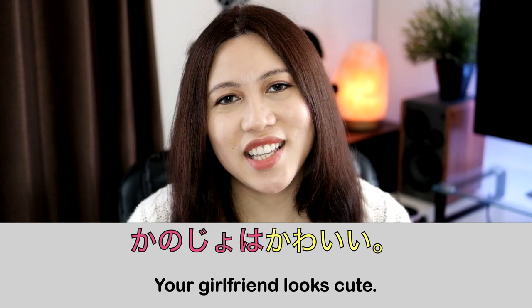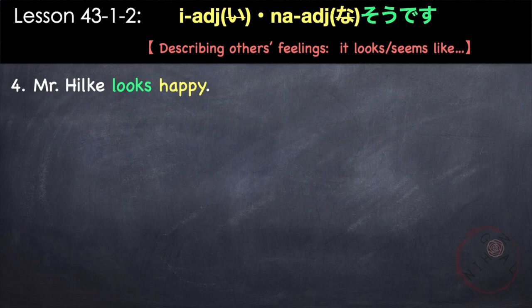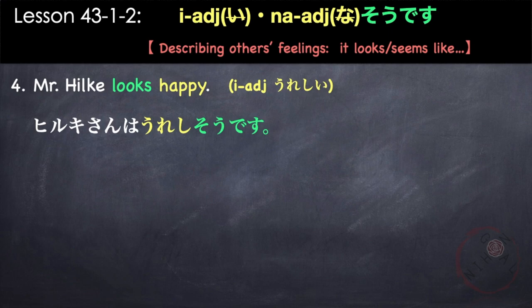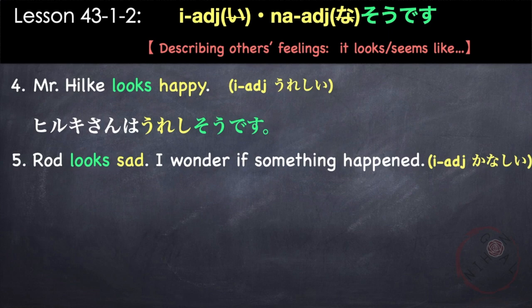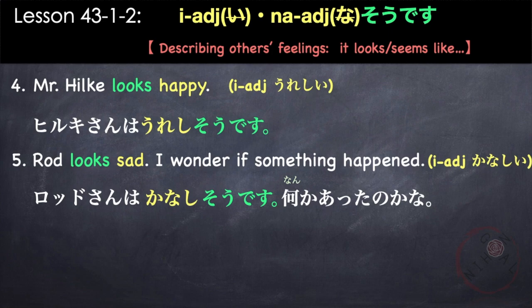However, if you want to say 'oh your girlfriend looks cute,' you can simply say kanojo wa kawaii desu or kanojo wa kawaii. When we want to describe other people's feelings, we can also use the adjective followed by so desu, because as a third person we are only trying to guess the other person's feelings. For example, 'Mr. Hillcale looks happy' — adjective ureshii. Hiruki-san wa ureshi so desu. 'Rod looks sad, I wonder if something happened' — adjective kanashii. Rod-san wa kanashii so desu. Nanka atta no kana.